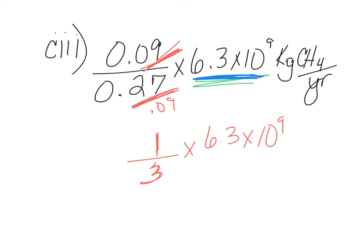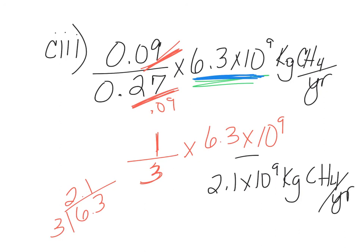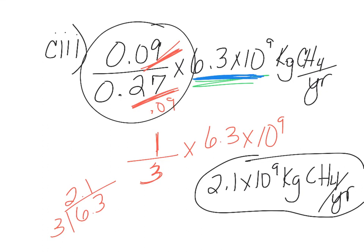And now I multiply this by this number. And so basically we're just taking 6.3 divided by 3. You may be able to do that in your head. If you're not, go ahead and do it off to the side. And so our answer is 2.1 times 10 to the 9th. Don't forget your units. Always, always, always have your units or you don't get points.